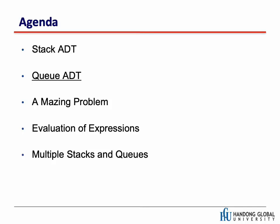Next we have queue, which is as popular as a stack. You are already familiar with this concept. At a coffee house we stand in a line, and that line is actually a kind of queue. We use this queue concept everywhere in our general life. Let's talk about the queue as an abstract data type, and then we will see some examples and the implementation of queue.